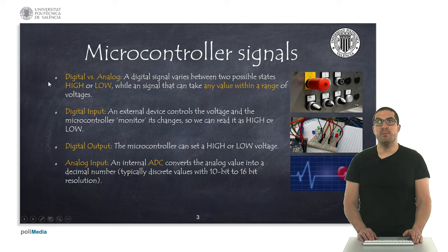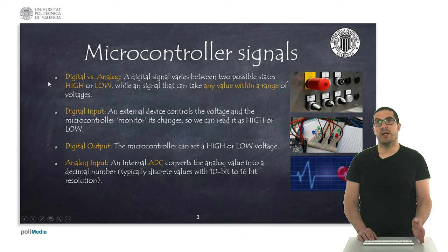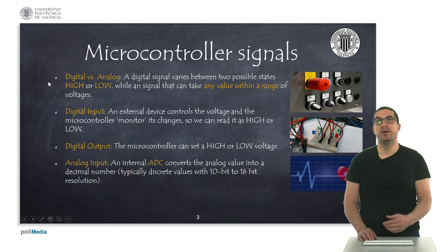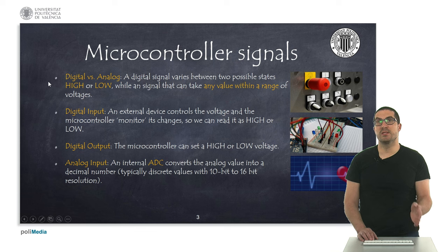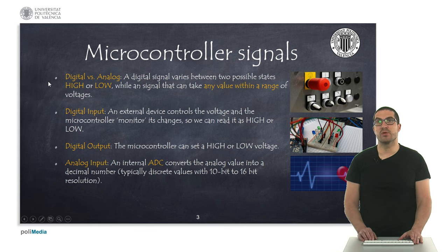We also have analog inputs, in which we use a special kind of circuit called ADC — a converter between analog and digital. It provides us a decimal number corresponding to the analog value of the signal. We can find converters with 10-bit or 16-bit resolutions, or different kinds of resolutions.